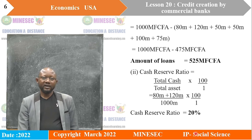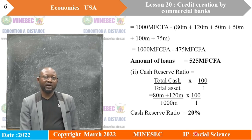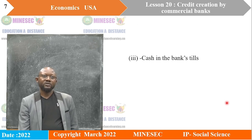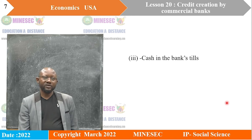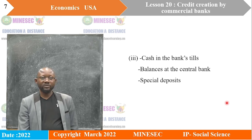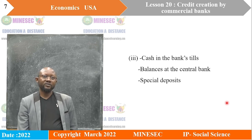The last question asks us to look at assets that do not yield any profit. We start with cash in the bank's coffers — money that does not attract any profit or interest. Second, balances at the central bank. And equally, special deposits do not yield any profit to the bank. These are three assets that could be identified from the asset side.